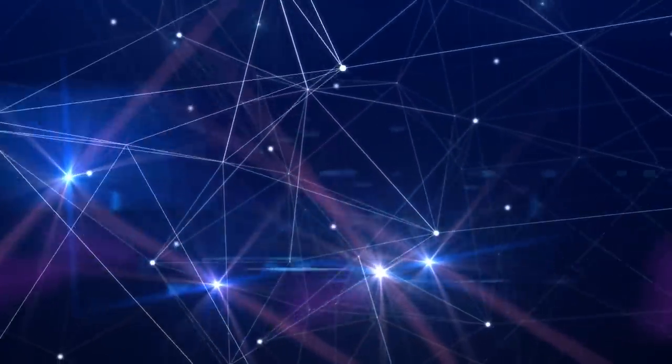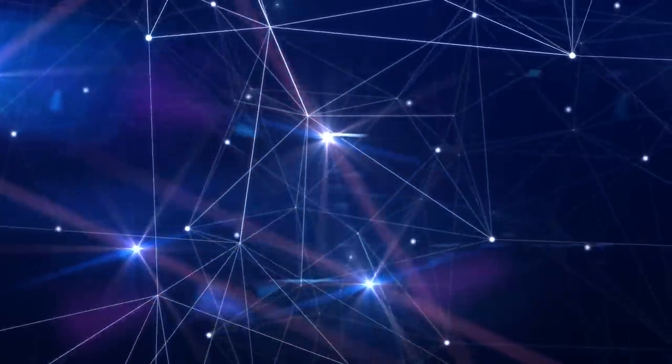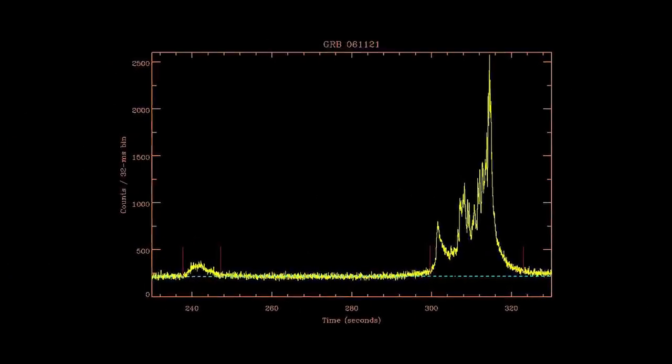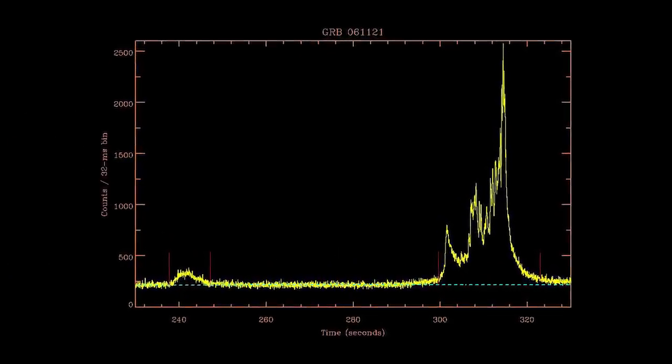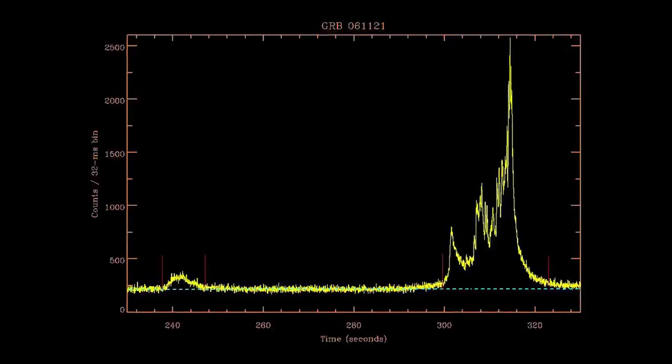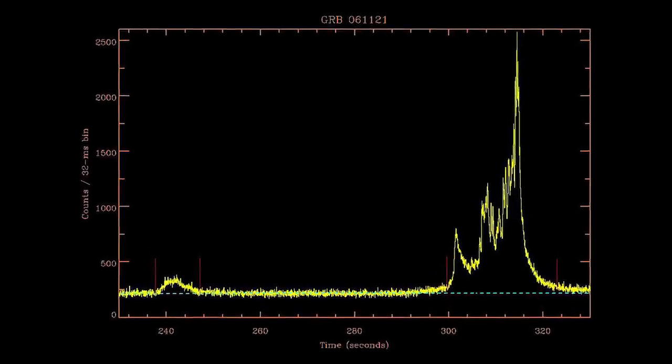So, gamma ray bursts are intense, short-lived bursts of extremely energetic gamma rays. But how are they produced? It depends. In fact, they are classified into two types, depending on their duration: short GRBs and long GRBs.